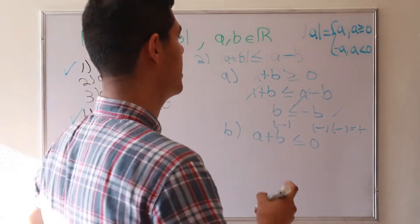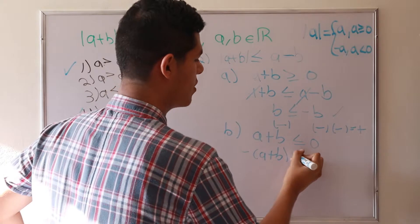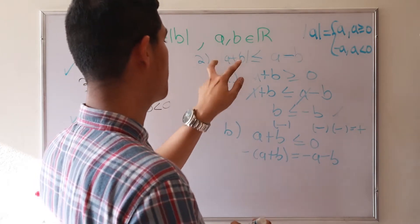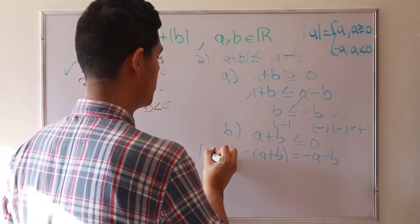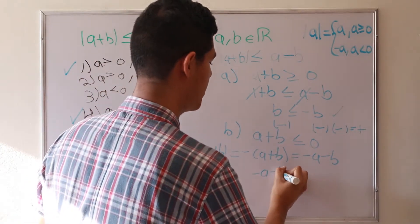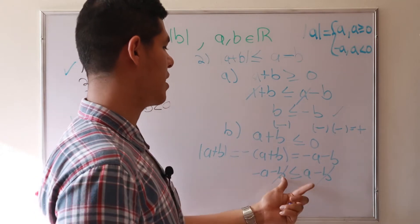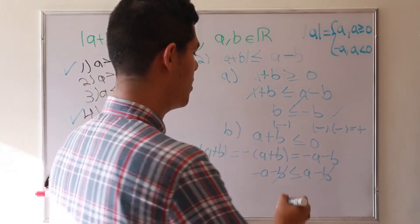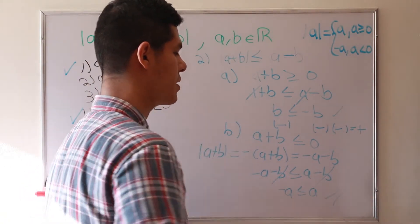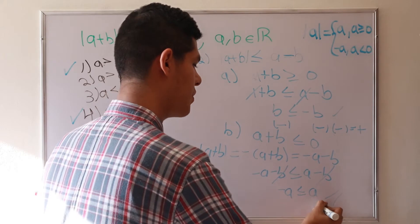Sub-case two: a plus b is less than zero. By the definition of absolute value, the absolute value of a plus b equals minus a plus b, which equals minus a minus b. Now we need minus a minus b to be less than or equal to a minus b. The minus b terms cancel, leaving minus a is less than or equal to a. This is correct because a is greater than zero, so a is positive and minus a is negative.